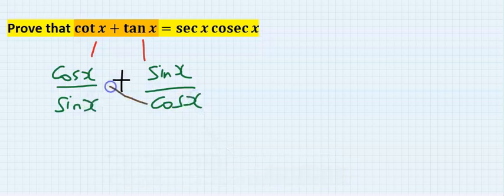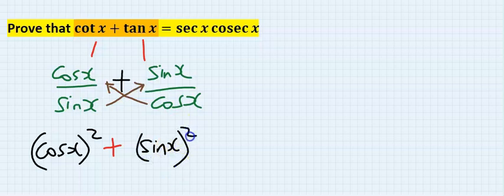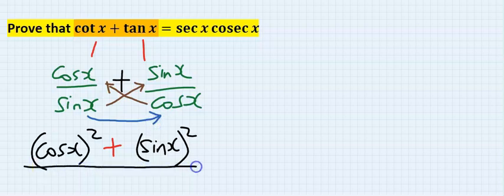This multiplied by this, we have cos x squared, plus this multiplied by this, we have sin x squared. Both of them will multiply at the denominator, which is sin x cos x.